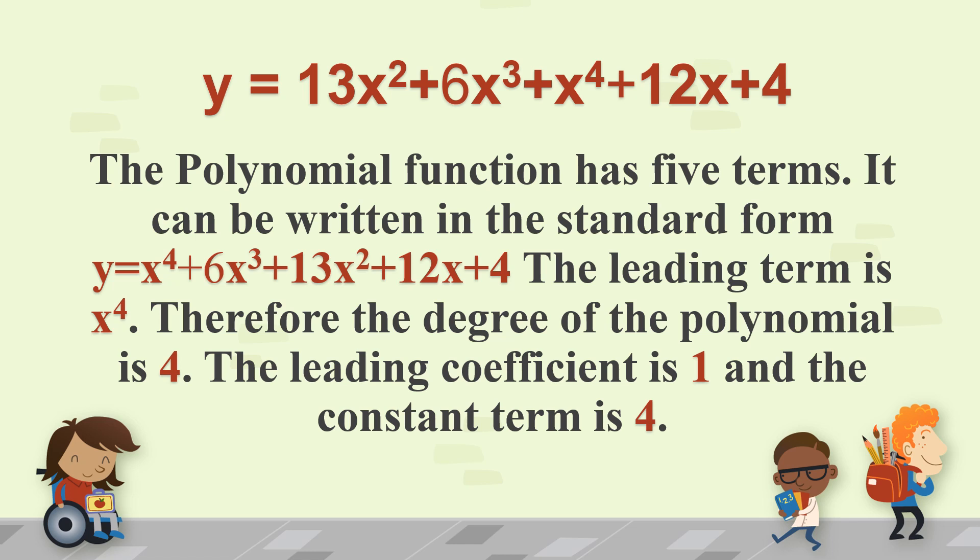The polynomial function has five terms. This is y = 13x² + 6x³ + x⁴ + 12x + 4. So it has five terms separated by the plus sign.